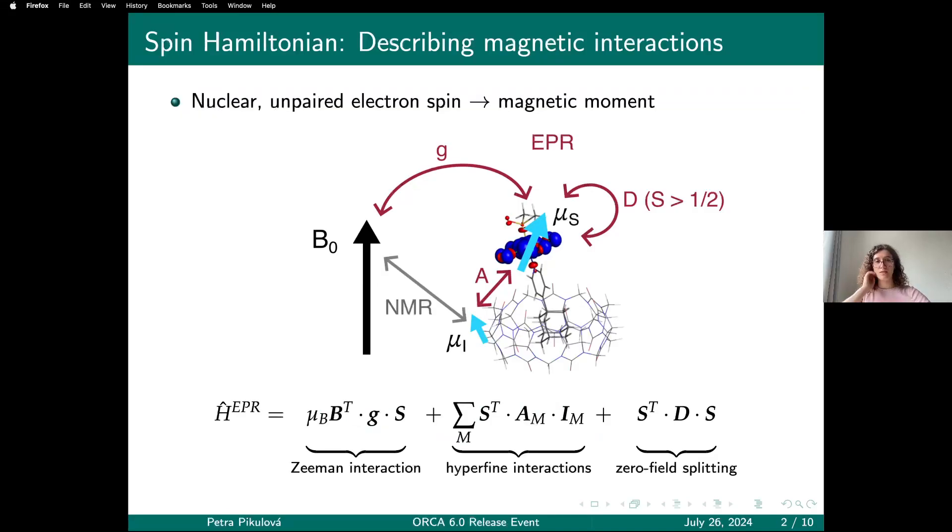When I say magnetic properties, I have in mind properties of the EPR spin Hamiltonian. So if you have a molecular system that has a total electron spin that is non-zero, it will have an associated magnetic moment and can be studied by electron paramagnetic resonance spectroscopy. The contents of EPR spectra are often summarized in terms of parameters of the EPR spin Hamiltonian, which contains the main physical interactions.